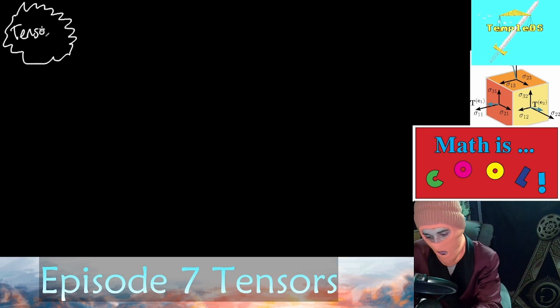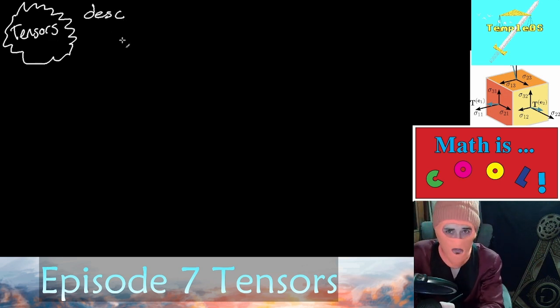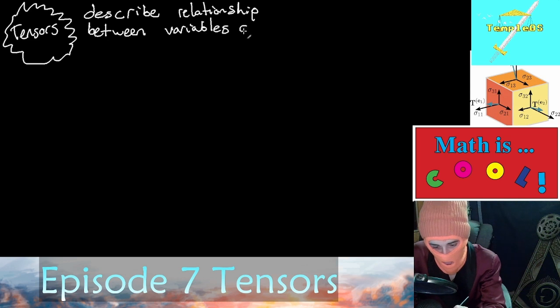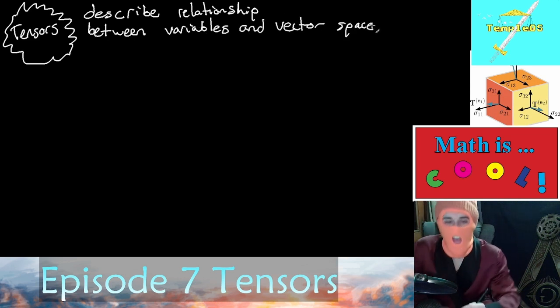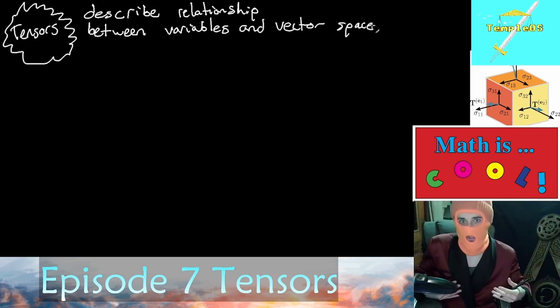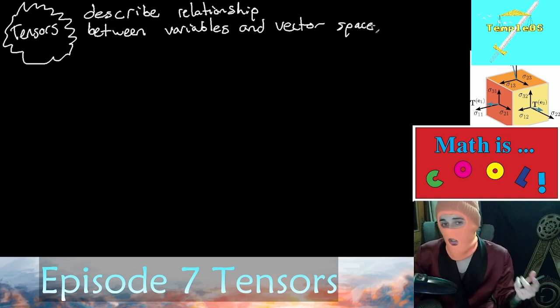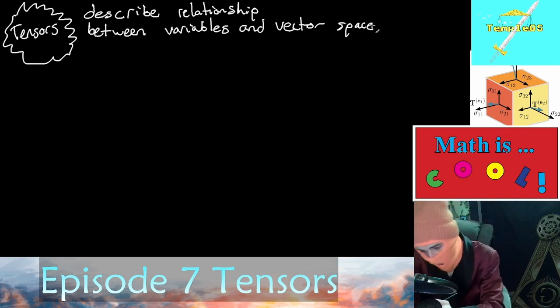Tensors describe a relationship between variables and a vector space. Everything that we've learned so far has been leading up to this moment. Basically, vectors and matrices are all types of tensors. They're called rank one and rank two tensors, but we even have rank zero tensors.